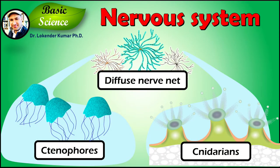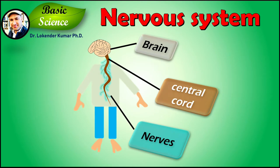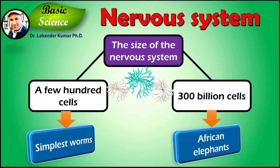The nervous system of the radially symmetrical organisms — ctenophores, also known as comb jellies, and cnidarians, which include sea anemone, hydra, corals, and jellyfish — consist of a diffuse nerve net. All other animal species, with the exception of a few types of worm, have a nervous system containing a brain, a central cord, and nerves radiating from the brain and the central cord. The size of the nervous system ranges from a few hundred cells in the simplest worms to around 300 billion cells in African elephants.